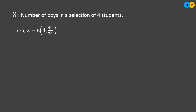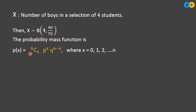The random variable X is a binomial variate with parameters n and p. Here n is the number of trials, so n = 4 since we are selecting 4 students. For probability of success p, we are looking for boys: out of 70 students, 40 are boys, so p = 40/70, which simplifies to 4/7.